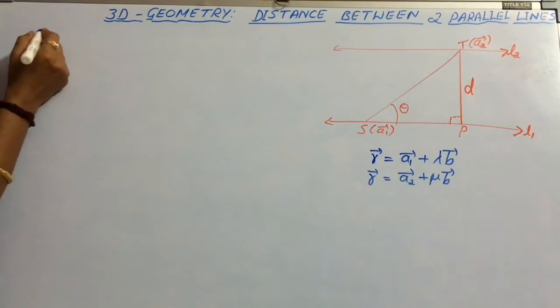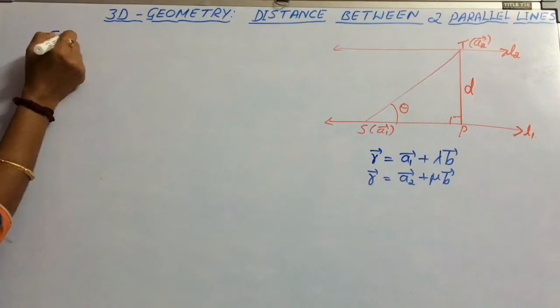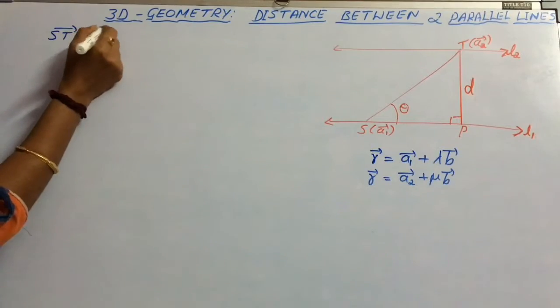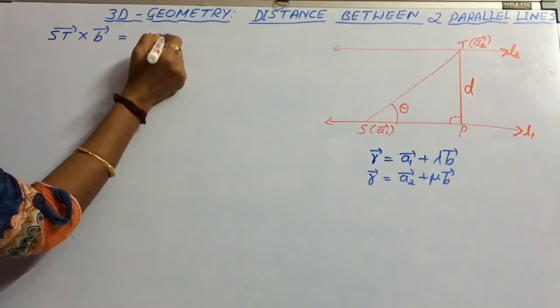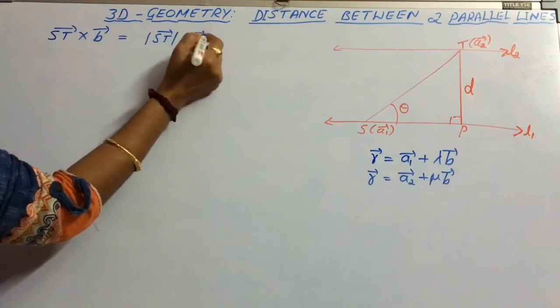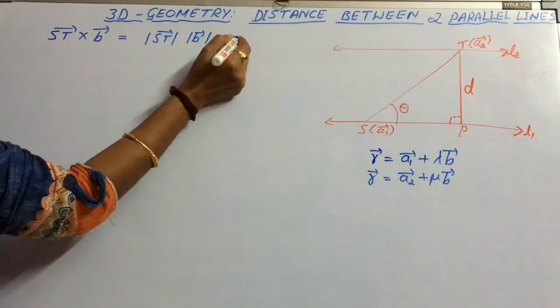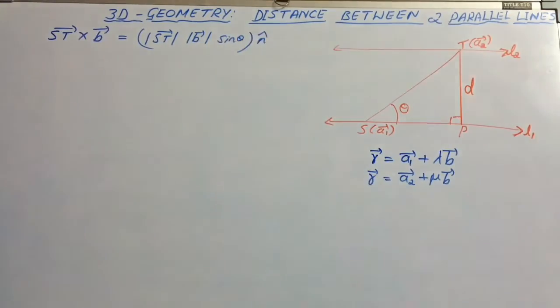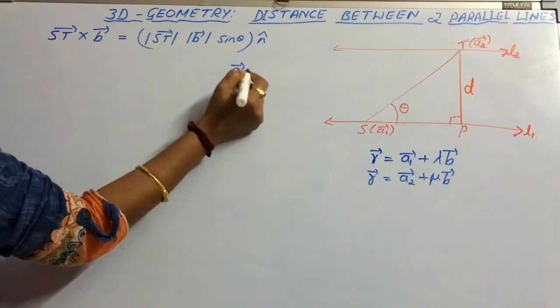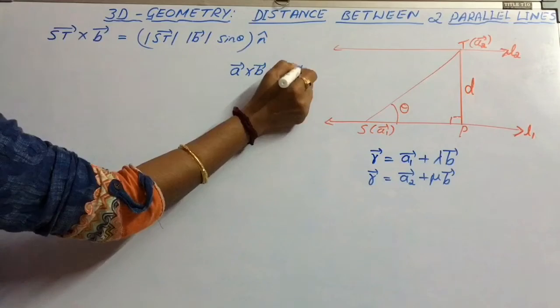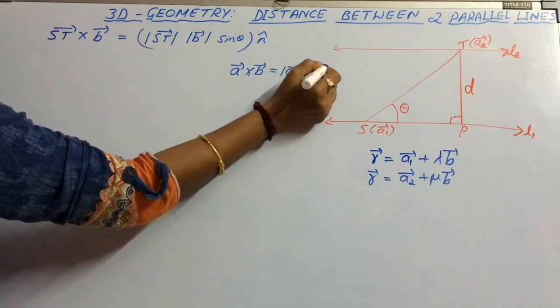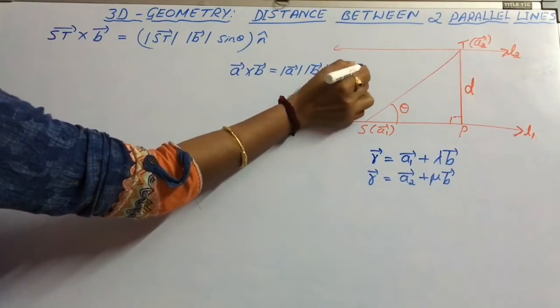Let us consider the cross product of St and vector b. St cross b equals |St| |b| sin theta n cap, where n cap is a unit vector along the direction of St cross b. This is because we know that vector A cross vector B equals |A| |B| sin theta n cap.